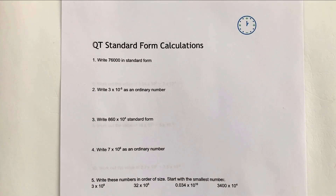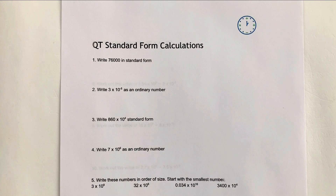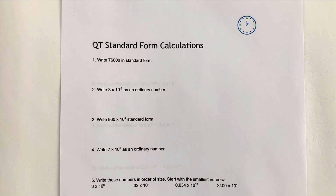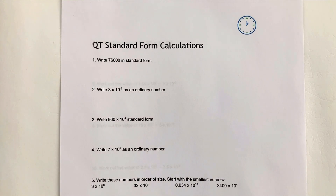In this video we're looking at standard form calculations. This is roughly Grade 3 or Grade 4 on a GCSE maths paper. Please do stop the video and have a go at each of the questions. You can also visit the 3 Minute Maths website and download this particular worksheet by following the link in the description.